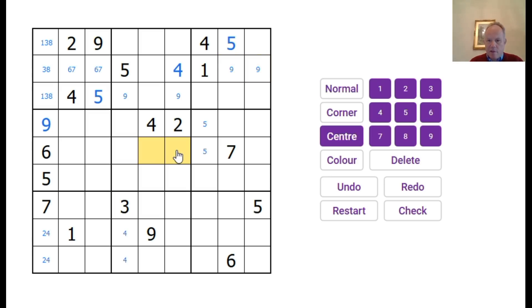What else have we got? There's a five in one of those. That does fix that five. We've got four down there and four in one of those two. So, four in box nine must be in row seven.